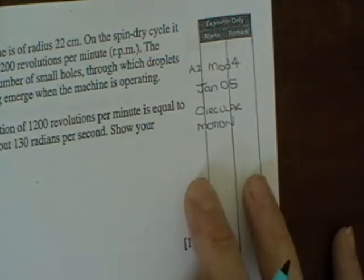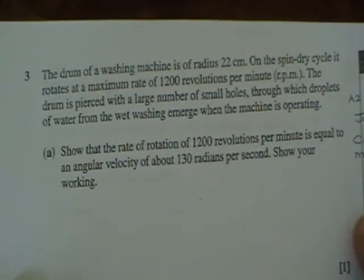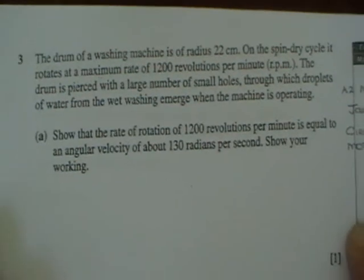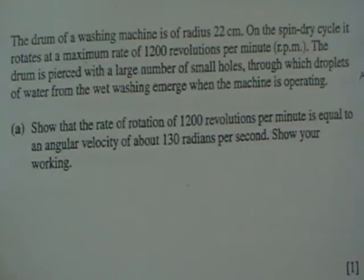This is January 05 A21 module 4 and this is question 3. The radius of a washing machine is 22cm. On the spin dry cycle it rotates at a maximum rate of 1200 revolutions per minute.